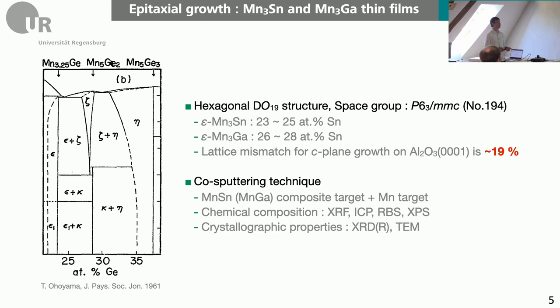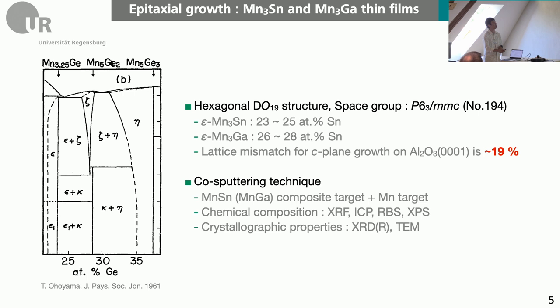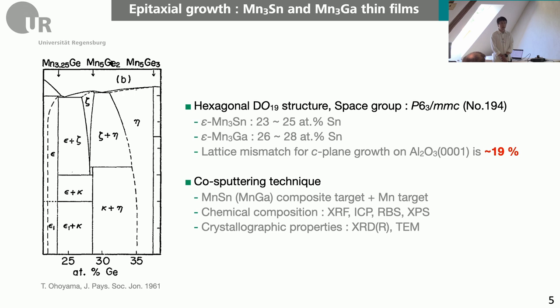We are aiming to grow two systems — epsilon phase of manganese-3-tin and manganese-3-gallium — and we swept the composition range. The problem is that we could use many types of substrate, but we wanted to use aluminum oxide because we can prepare a good quality surface quite easily. But the lattice constant difference between this substrate and the main material is more than 90 percent, so we need a buffer layer to minimize the lattice mismatch.